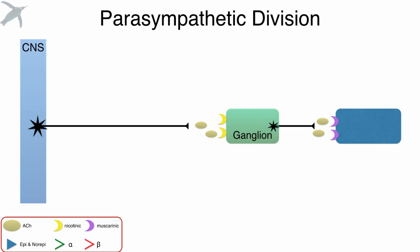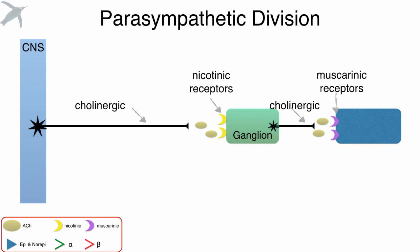Let's look at the parasympathetic division. The preganglionic neuron in the parasympathetic division is always cholinergic, which means it releases acetylcholine. The receptors on the ganglion are always nicotinic, so that means this signal is always excitatory. The postganglionic neuron is also cholinergic — it also releases acetylcholine. Now the receptor type on the target cells is different: these are muscarinic receptors. So depending upon which subtype — remember there were five subtypes — you'll get either an excitatory or an inhibitory response. For example, in the heart it would be inhibitory, but in smooth muscle of the gut it would be excitatory. And that is the parasympathetic motor pathway.